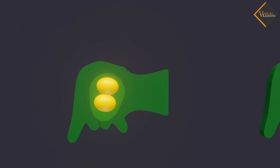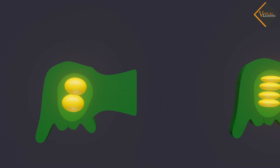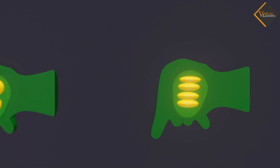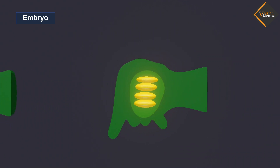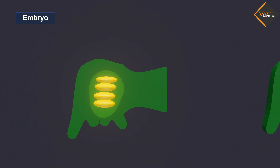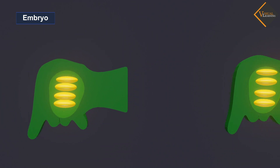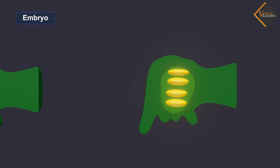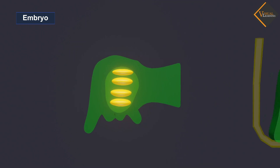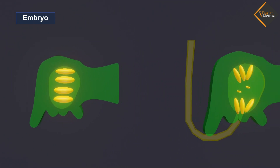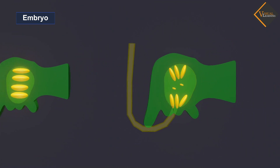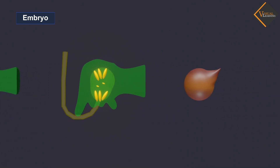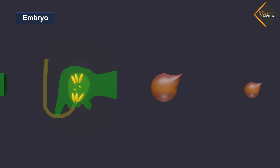After fertilization, the zygote divides several times to form an embryo within the ovule. The ovule develops a tough coat and is gradually converted into a seed.